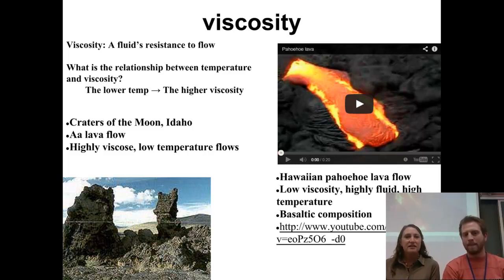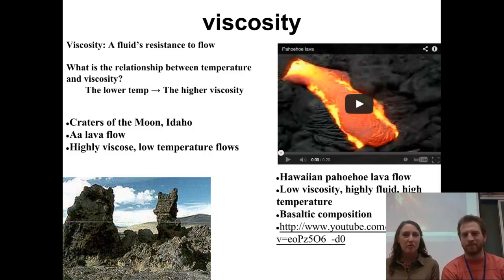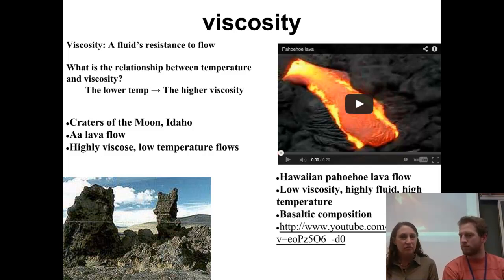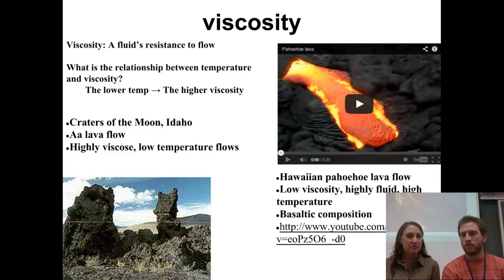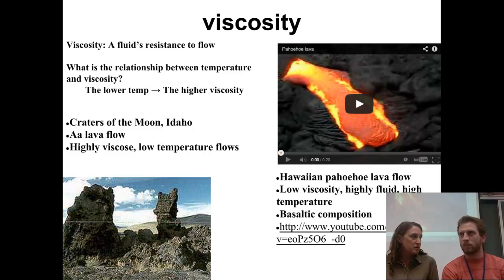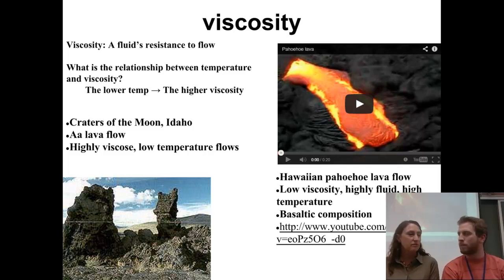We've got pictures here of a couple of different examples. In the top right corner, you've got a really traditional pahoehoe flow from Hawaii — a Hawaiian word that means ropey. You get a very smooth flow because it is a lower viscosity. In this case, you've got basaltic magma, which is hotter and lower viscosity because there are fewer really big silicate structures in that magma. So it continues to flow over longer distances and spread out.